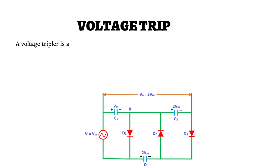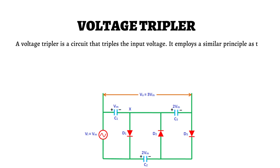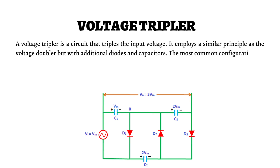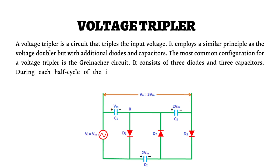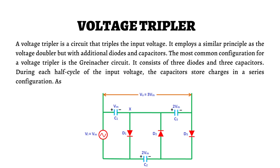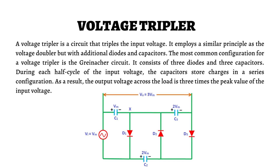A voltage tripler is a circuit that triples the input voltage. It employs a similar principle as the voltage doubler but with additional diodes and capacitors. The most common configuration is the Greinacher circuit, consisting of three diodes and three capacitors. During each half-cycle of the input voltage, the capacitors store charges in a series configuration, resulting in an output voltage across the load that is three times the peak value of the input voltage.